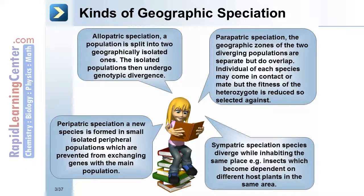Sympatric speciation occurs when species diverge while inhabiting the same place. For instance, insects may become dependent on different host plants in the same area.